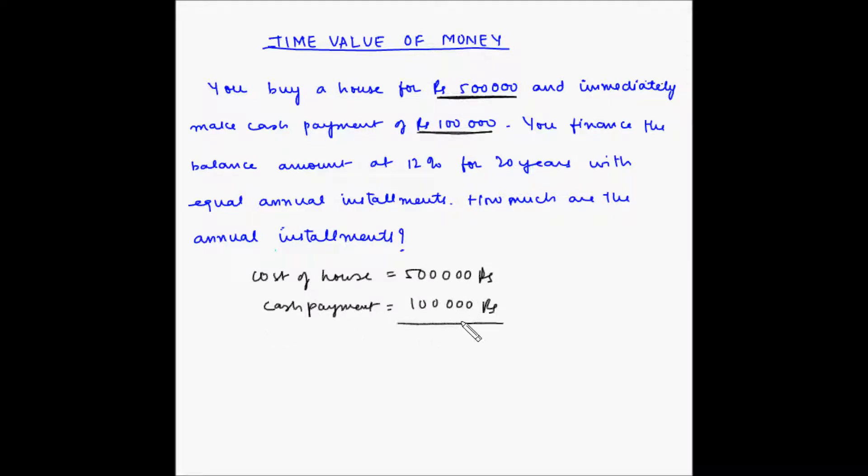So remaining amount is four lakh rupees. Now you decide that you cannot pay this amount immediately, so you approach a bank and ask them to provide you a loan for this amount. The bank says that we will give you this much money at an interest rate of 12%.